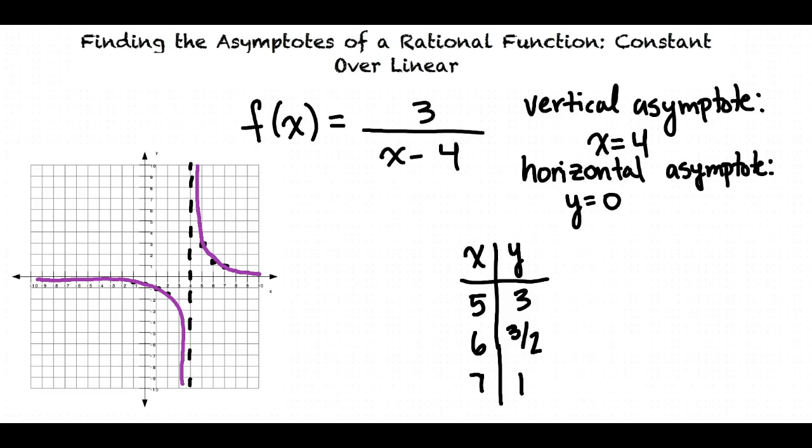That's a lot of information. To summarize: when finding vertical asymptotes, we set the denominator equal to 0 and solve for x. When finding horizontal asymptotes, we examine the degree of the numerator and the degree of the denominator and determine which rule applies. When we have a constant expression over a linear expression, the horizontal asymptote will be y = 0.